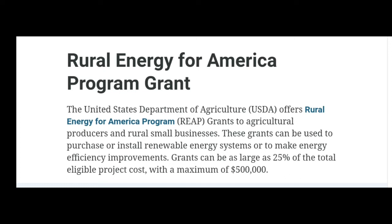Next we have the Rural Energy for America grant from the Department of Agriculture. It assists rural small businesses and agricultural producers, also known as the REAP grant. If you're applying for the grant, you need to have at least 75% of project costs. If you're applying for the loan, you need to provide at least 25% of the project costs. They have both grants and loans available.